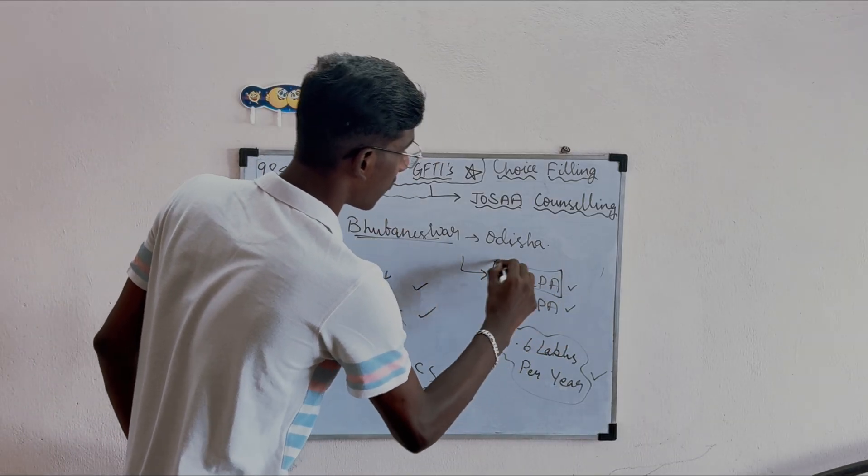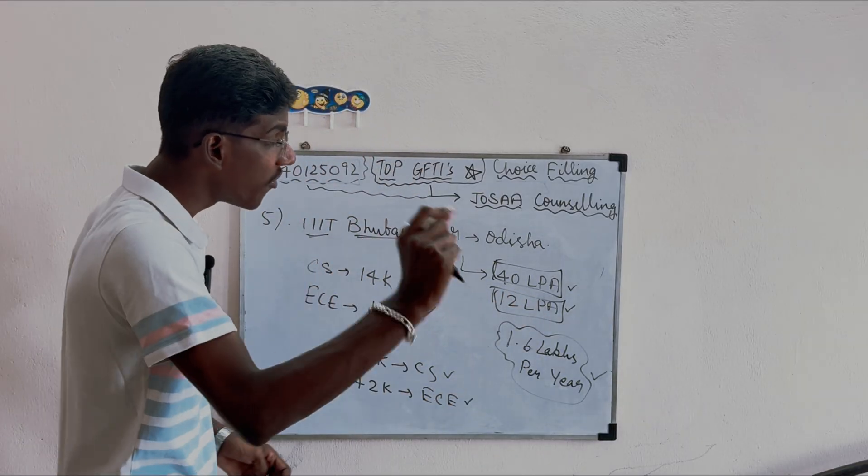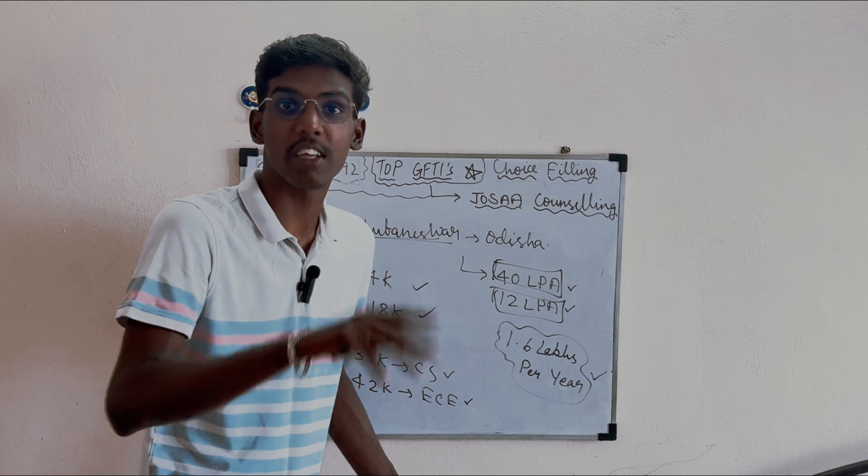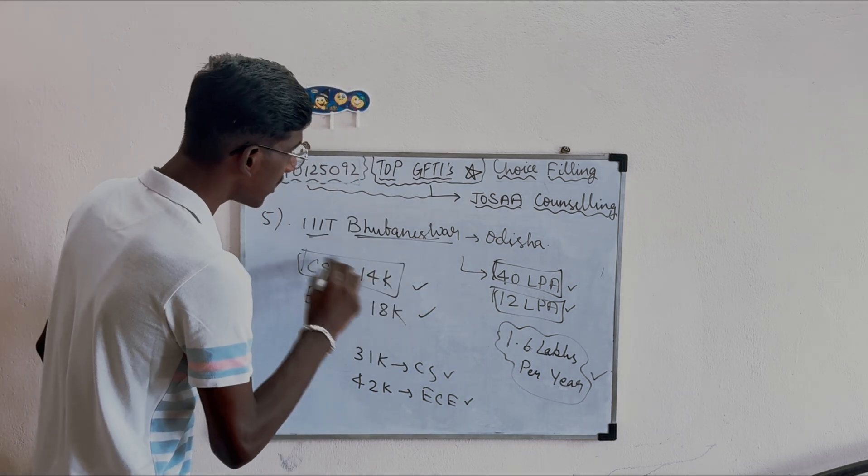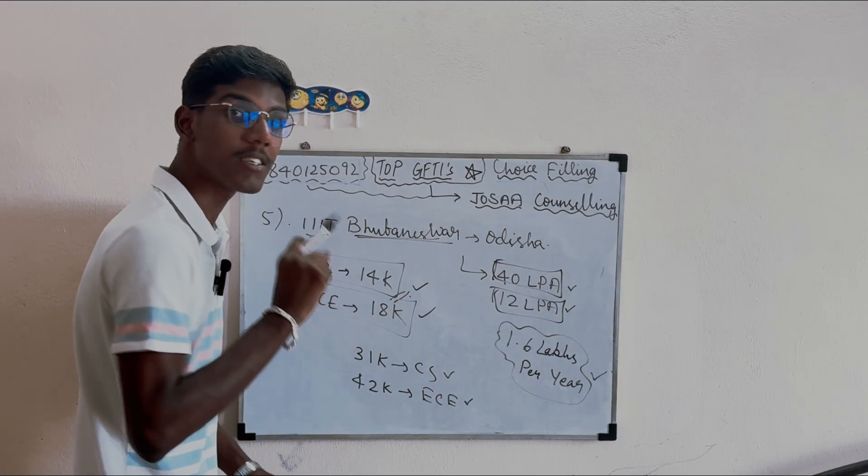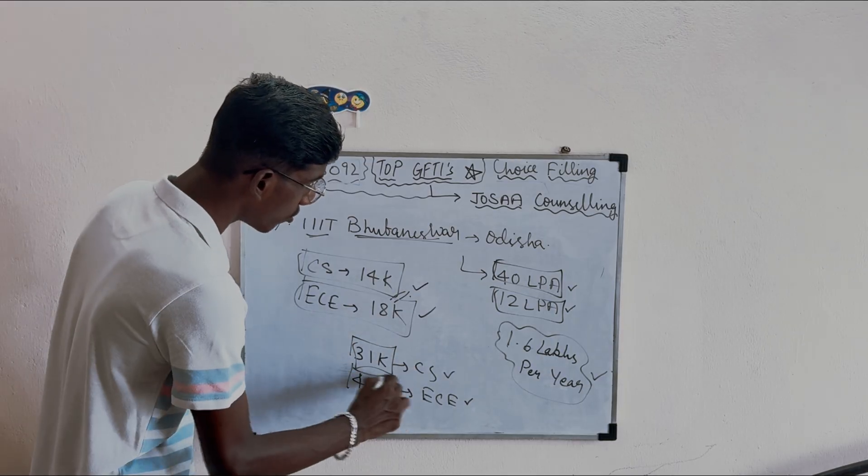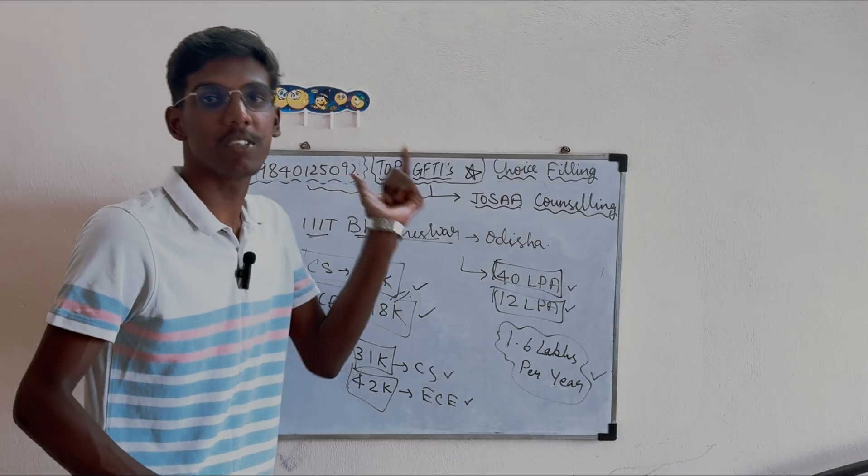Fifth top GFTI fee per year including hostel and academic fees. OBC ranking: CS 14k, ECE 18k. Open category: CS 31k, ECE 42k.